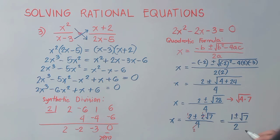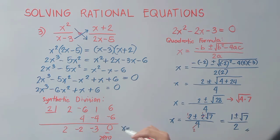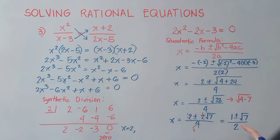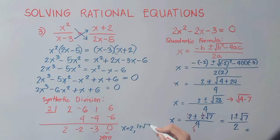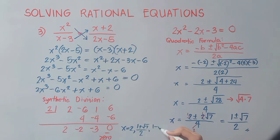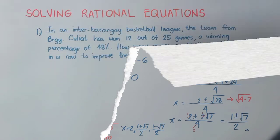So our set of solutions is: x = 2, x = (1 + √7)/2, and x = (1 − √7)/2. These are all our final answers.